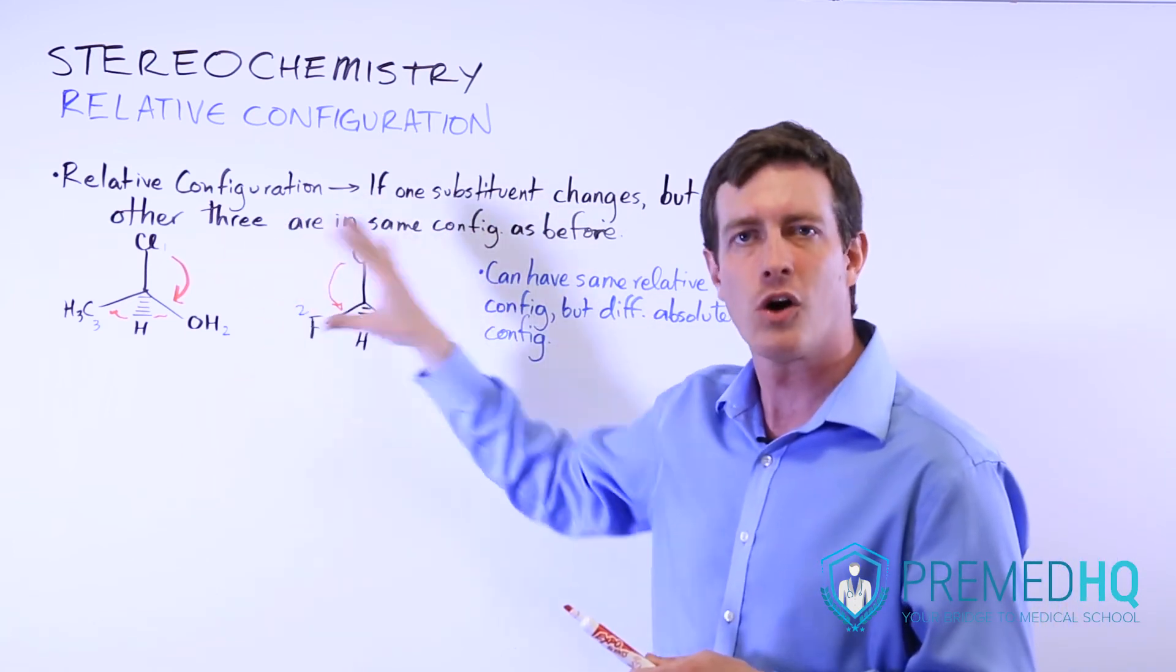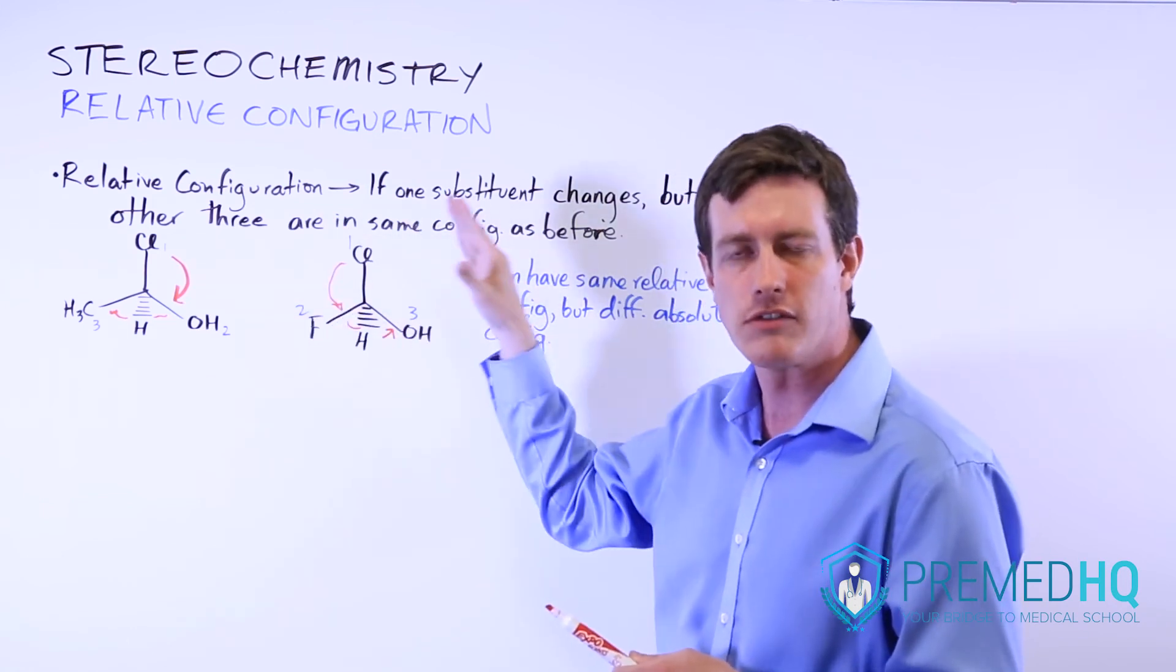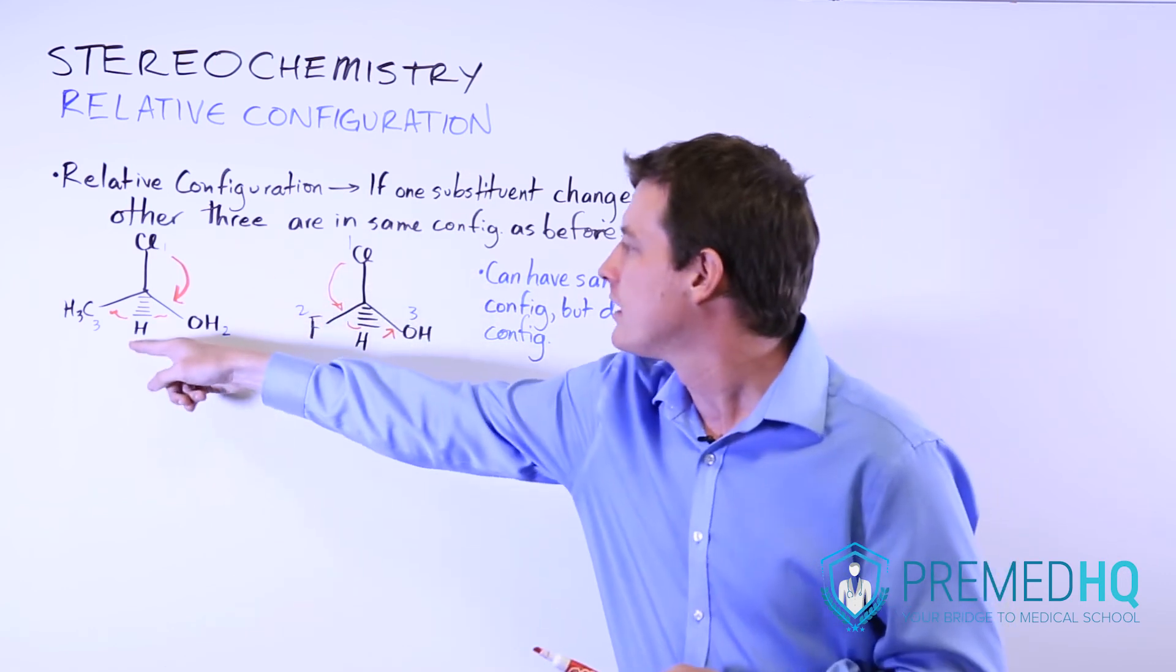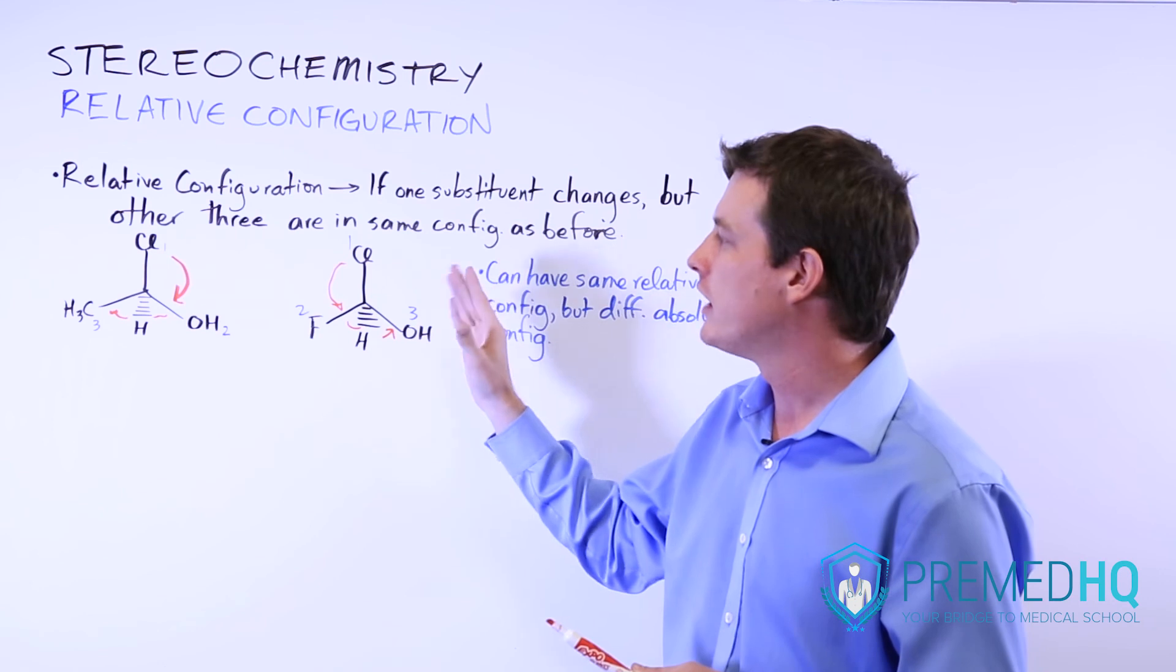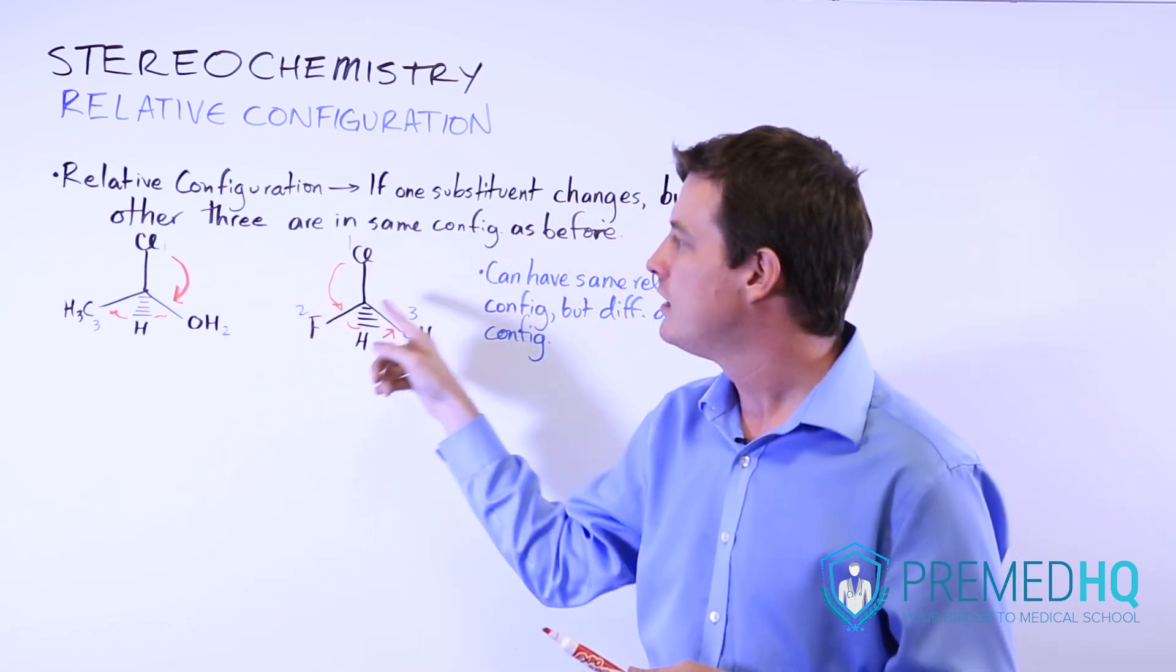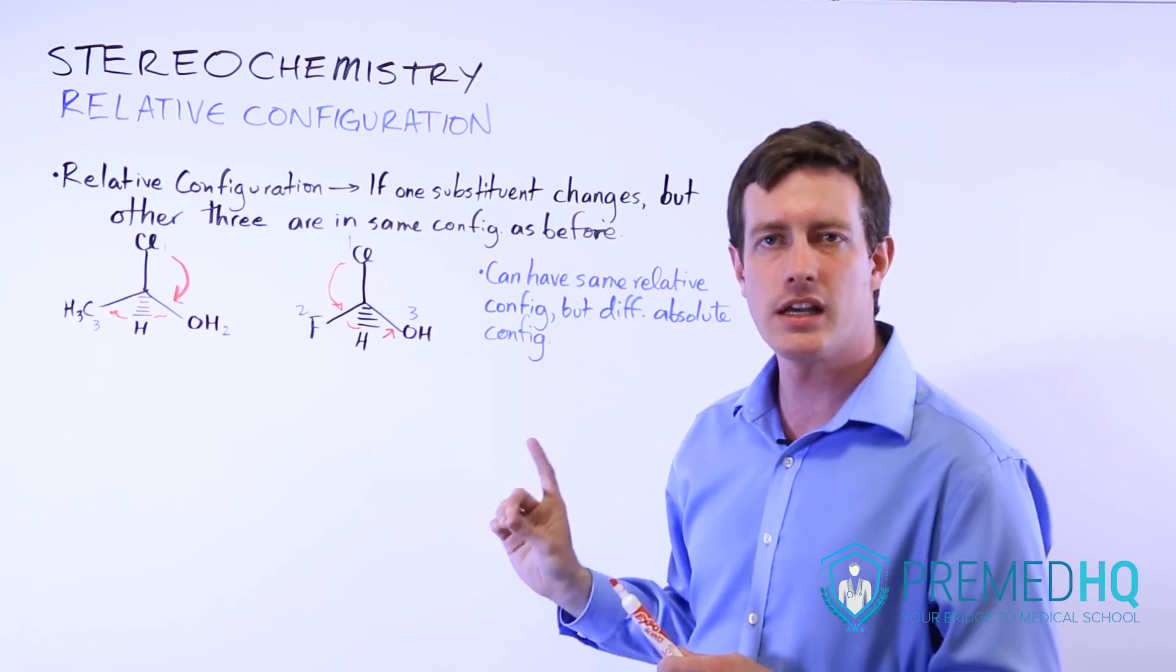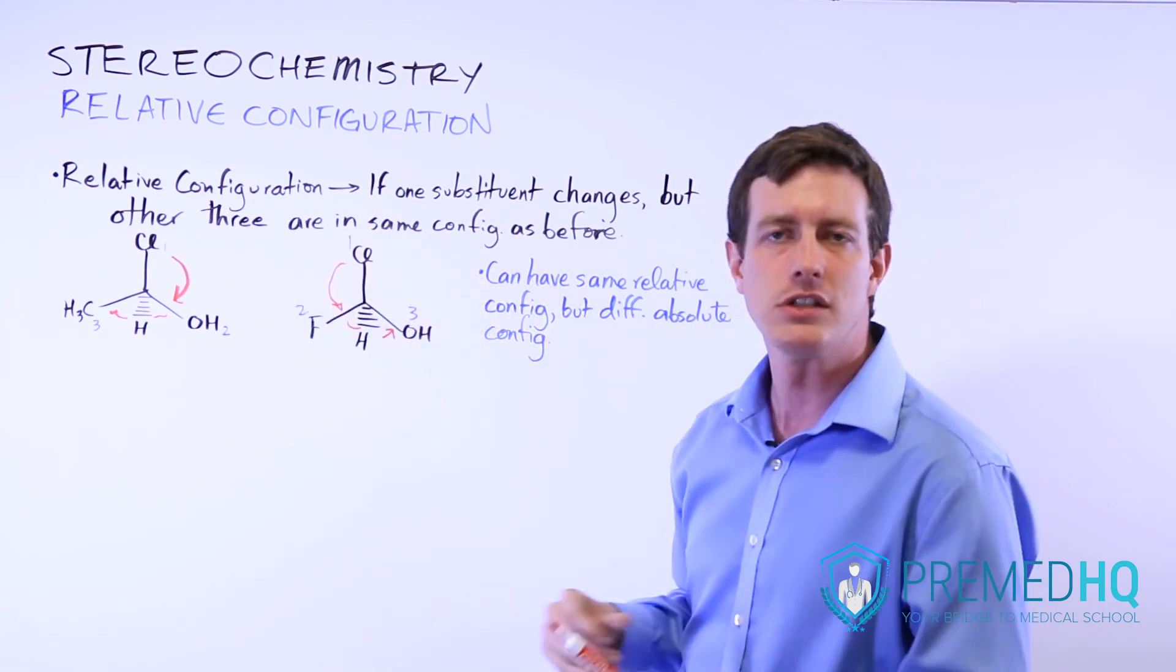Absolute is R or S, and it's based on the clockwise or counterclockwise orientation of high priority substituents, when you are facing the lowest priority atom away from you. Relative configuration is a comparison between two slightly different molecules, where one substituent has changed, but everything else remains in the same position relative to each other.